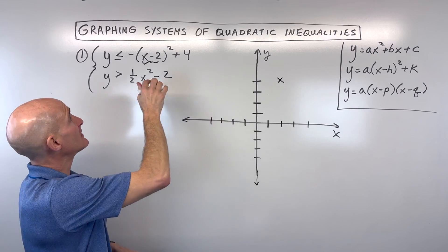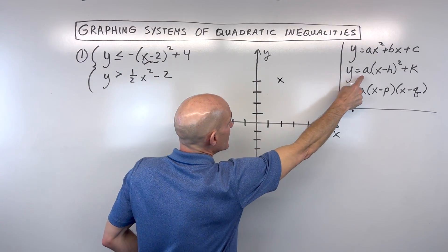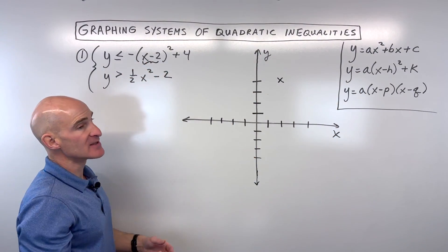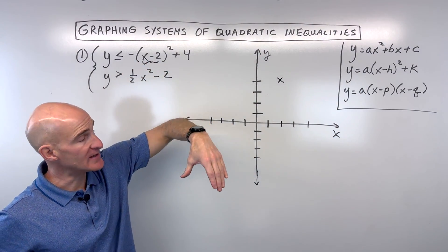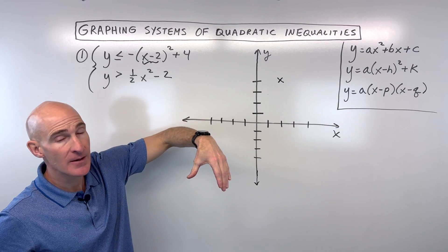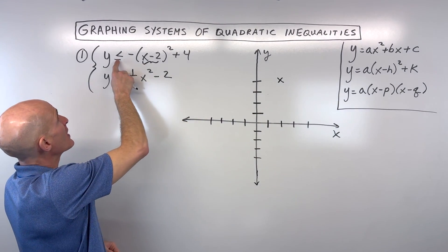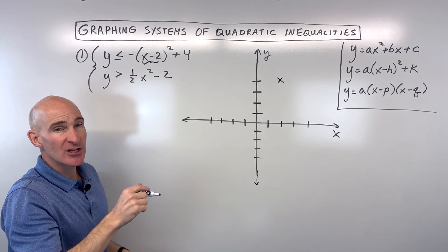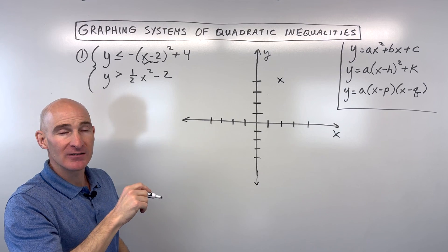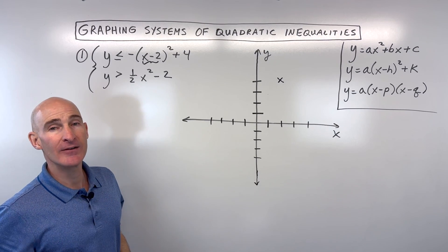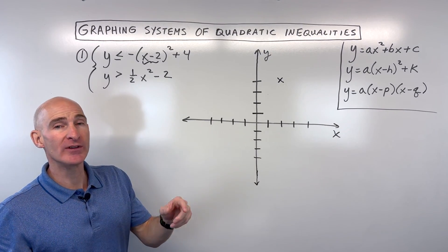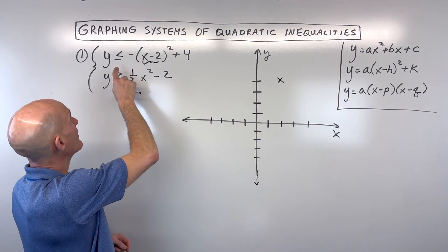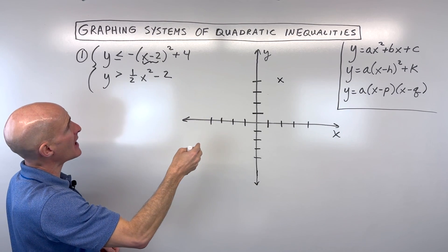Notice that the a value is negative one, so that negative means that it's going to be opening downward. And notice we have less than or equal to — if it's equal to, it's going to be a solid line. If it's less than or greater than but not equal to, then it's going to be a dashed or dotted line. So here we have equal to, it's going to be solid.